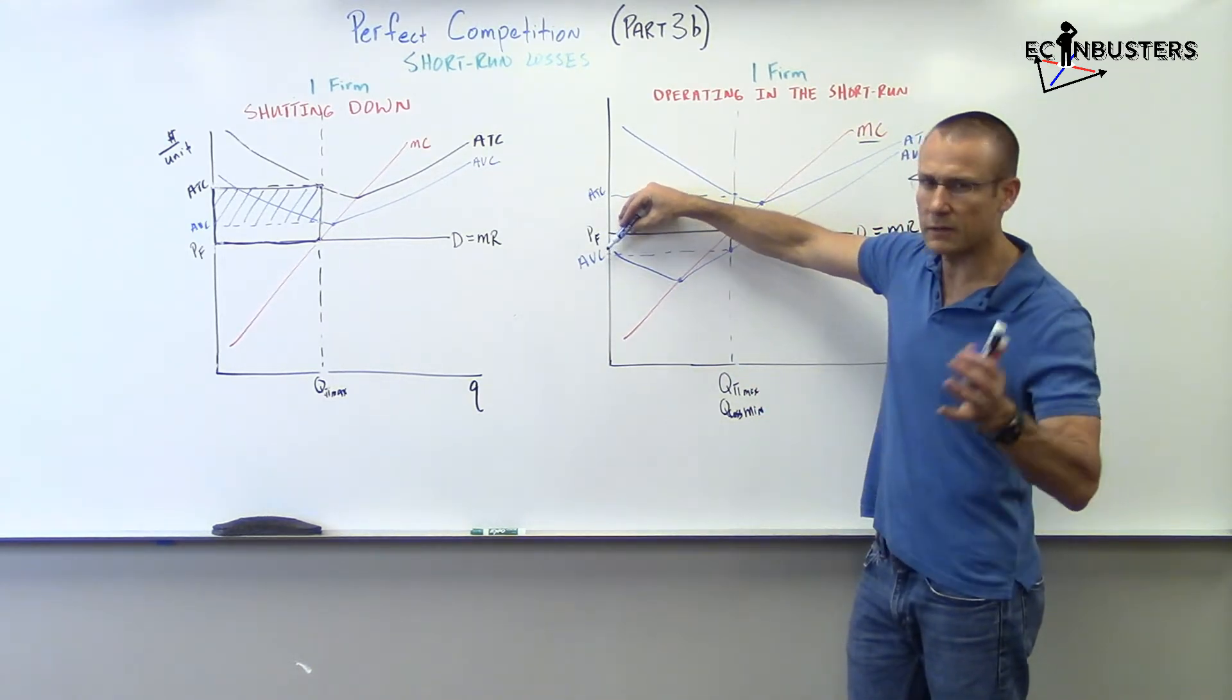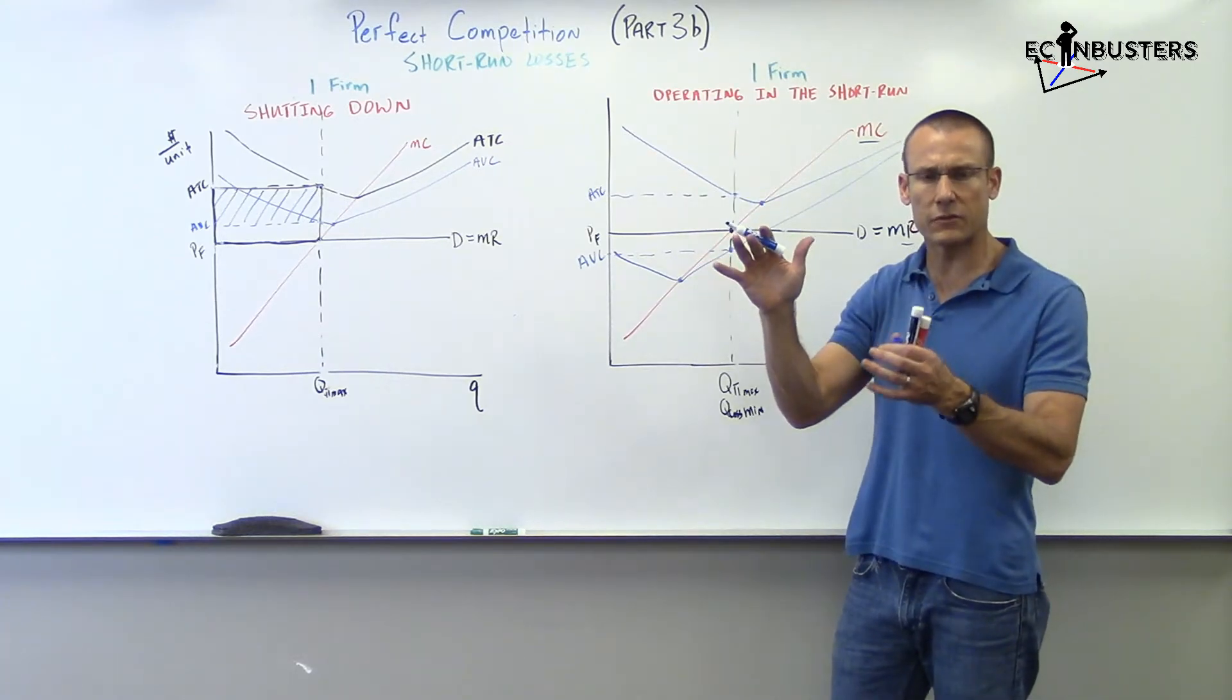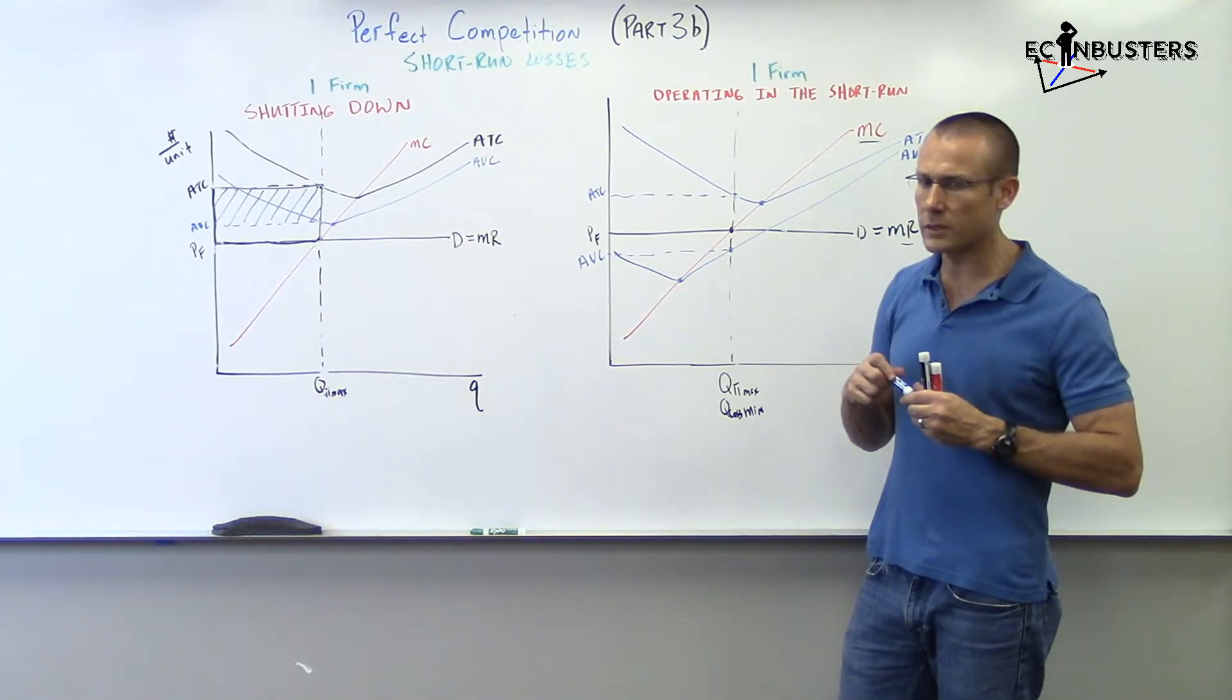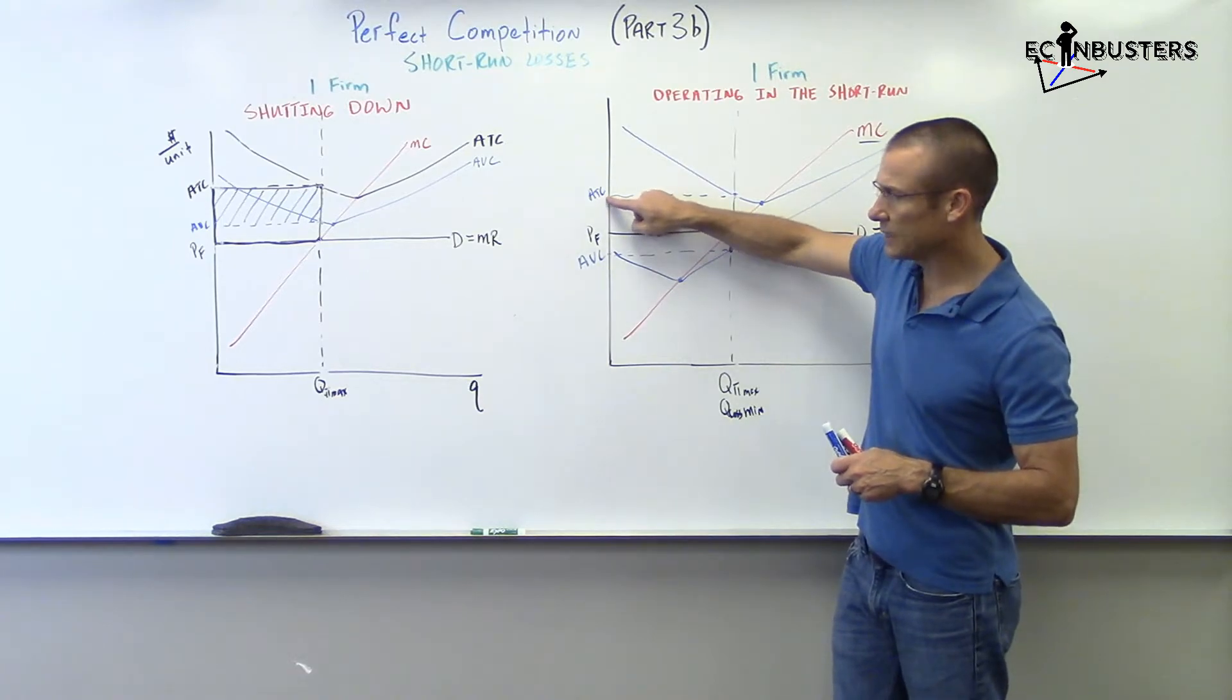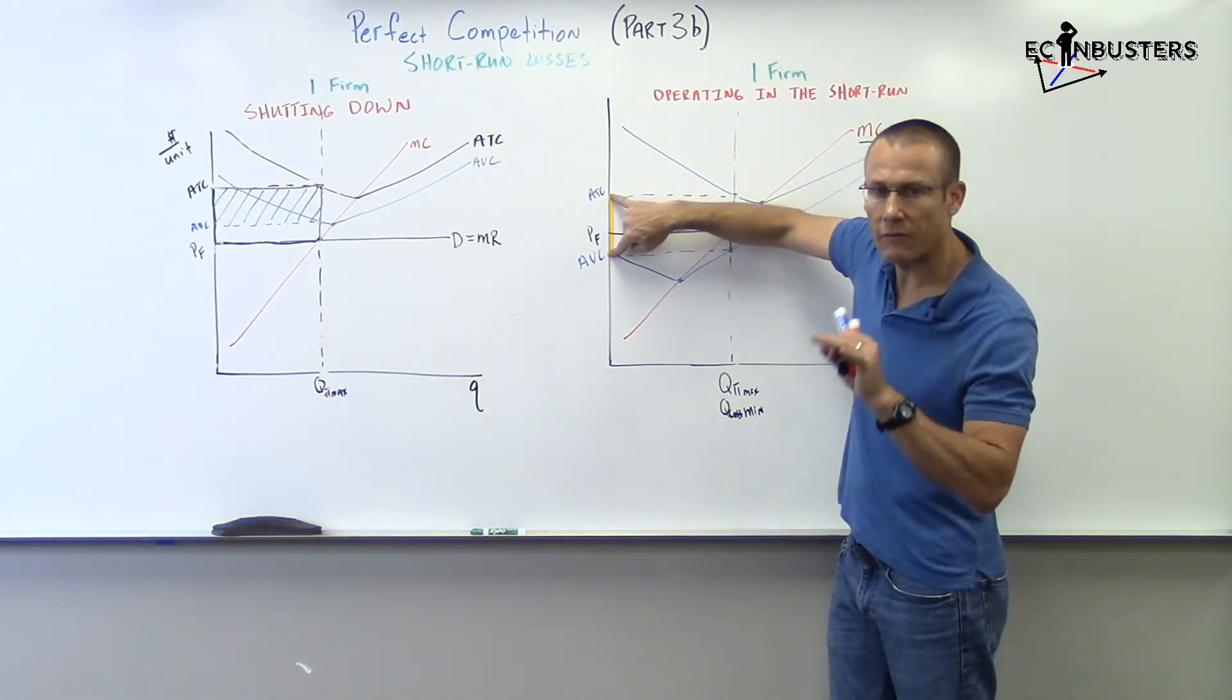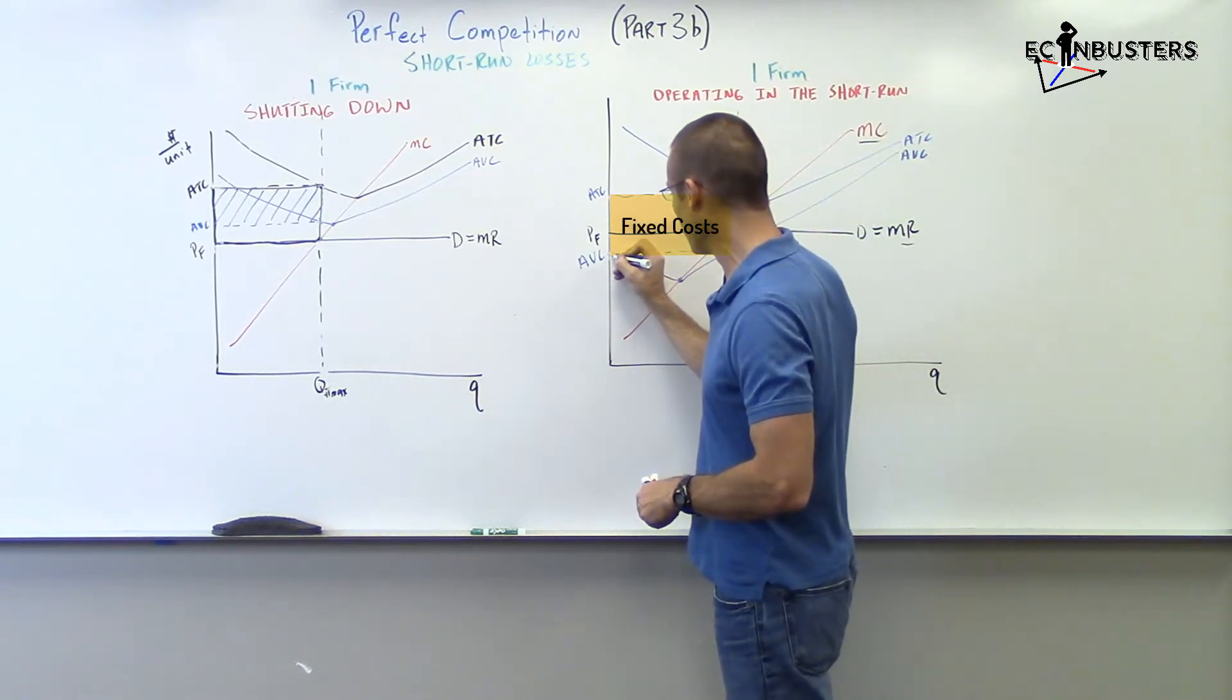Take a look at this. Price above AVC. Right there, just that. Our price, our per unit revenue is greater than our average variable cost. If your per unit revenue is greater than your average variable cost, that should scream, hey, we should operate. We're going to do better by operating than by not operating. Because if we shut down, what will be our losses? We will incur the fixed cost if we shut down. ATC minus AVC is AFC. This vertical distance is AFC. AFC, average fixed cost, times Q, times Q gives us fixed cost.